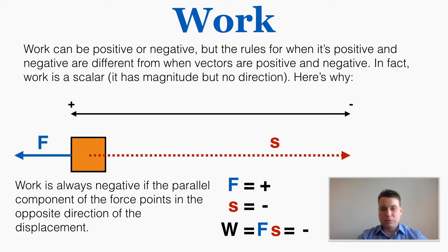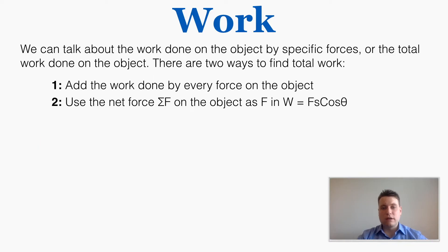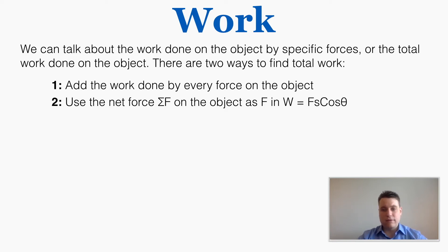We can talk about the work done on an object by specific forces, or the total work done on the object. There are two ways to find the total work: we can add the work done by every individual force on the object, or we can use the net force in our work equation — adding up all forces to find the net force is another way of finding the total work done.